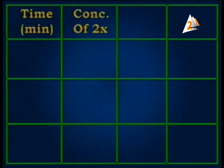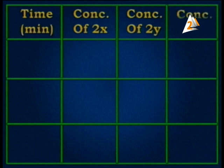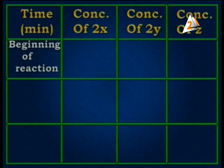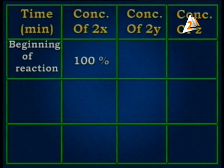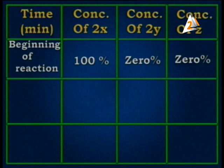Now let's look at the table. We have time per minute, concentration of 2X, concentration of 2Y, and concentration of Z. At the beginning of the chemical reaction, the concentration of 2X is 100%, because it is the beginning and there is no reaction yet — the reactant is still unchanged. The concentration of 2Y is 0% and concentration of Z is also 0%, because there is no reaction and therefore no product.